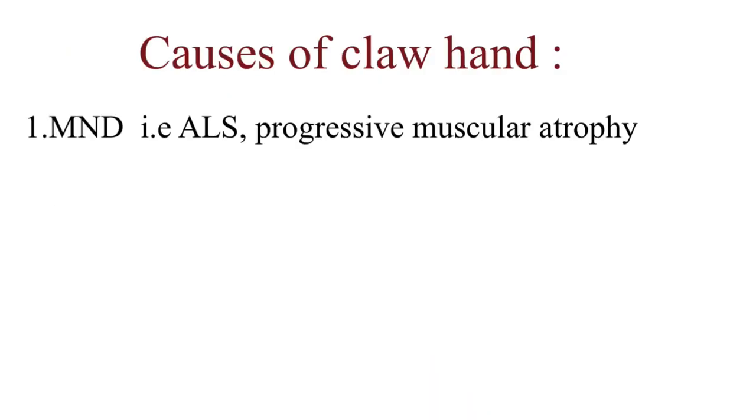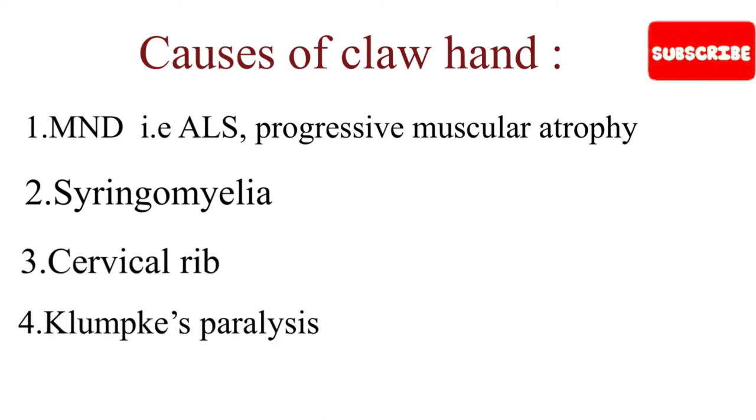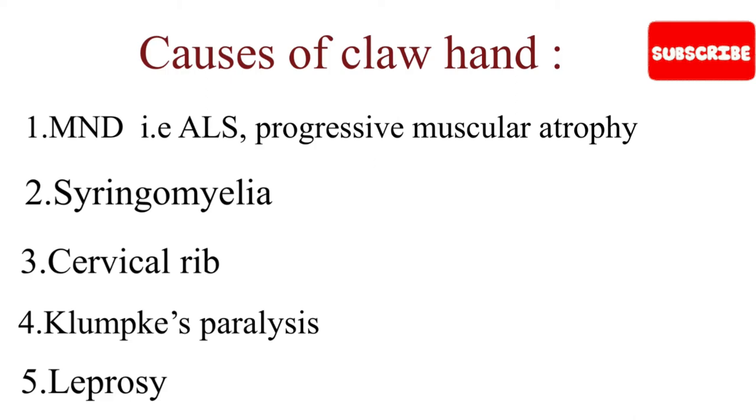Some of the causes of claw hand include motor neuron diseases, syringomyelia, cervical rib, Klumpke's paralysis, and leprosy.